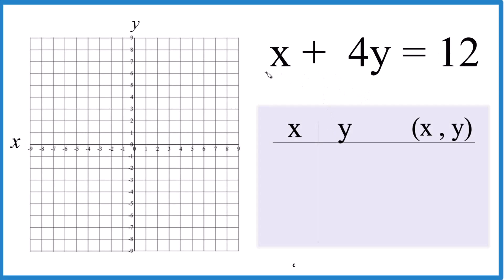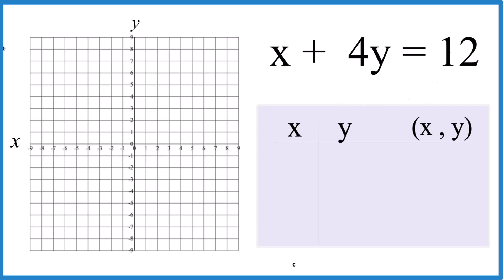Someone asked me to graph this equation x plus 4y equals 12. So how would I do that? Well, you could use slope-intercept form to do it. You'd need to rearrange it so you have y by itself, y equals mx plus b. That would work.